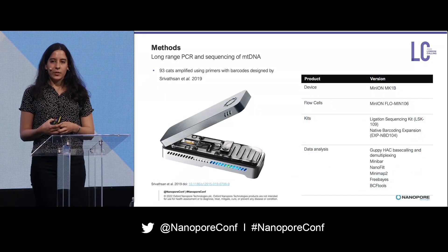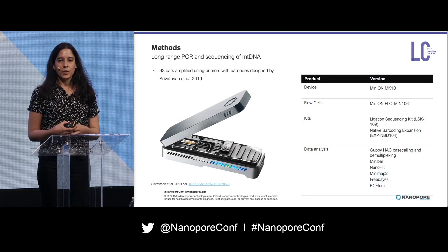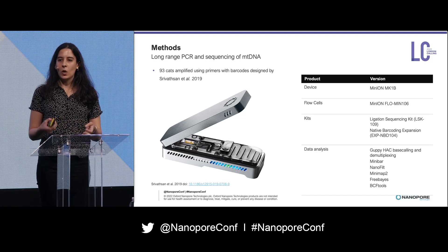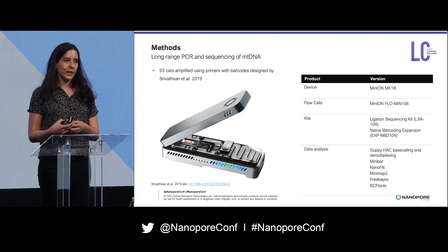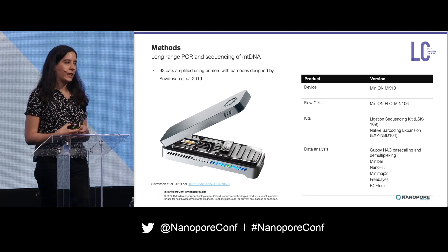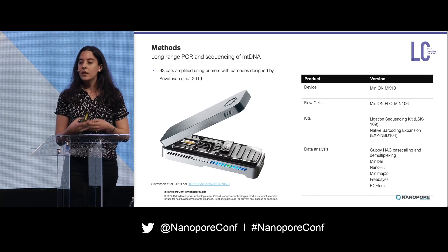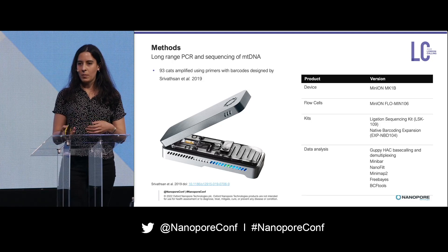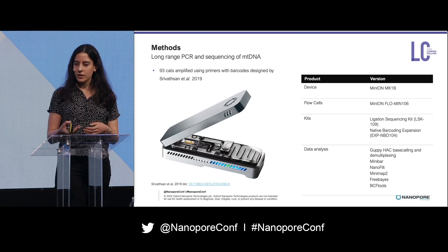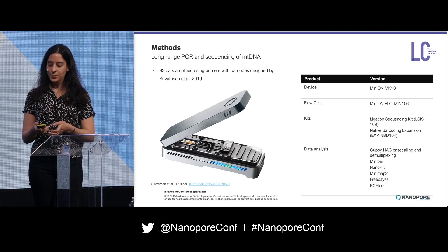For the 93 cat blood samples we used barcoded primers, and we used different combinations of these together with the native barcoding expansion, so that we could sequence eight cats per native barcode. We sequenced this on an R9 flow cell, and mapped the cats to the cat mitogenome reference and called the variants.